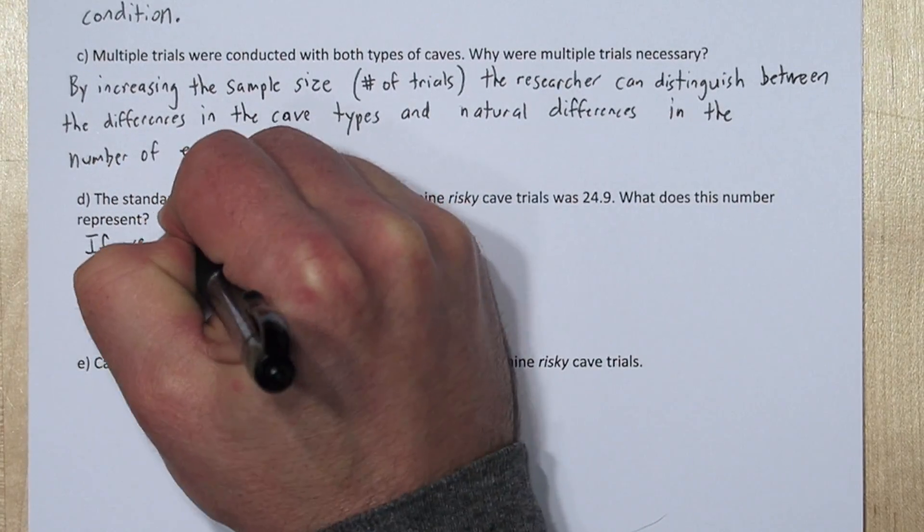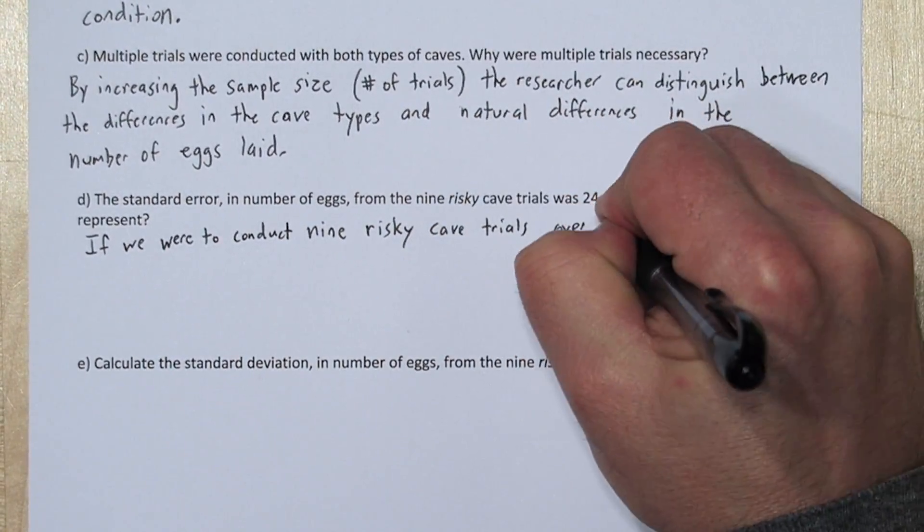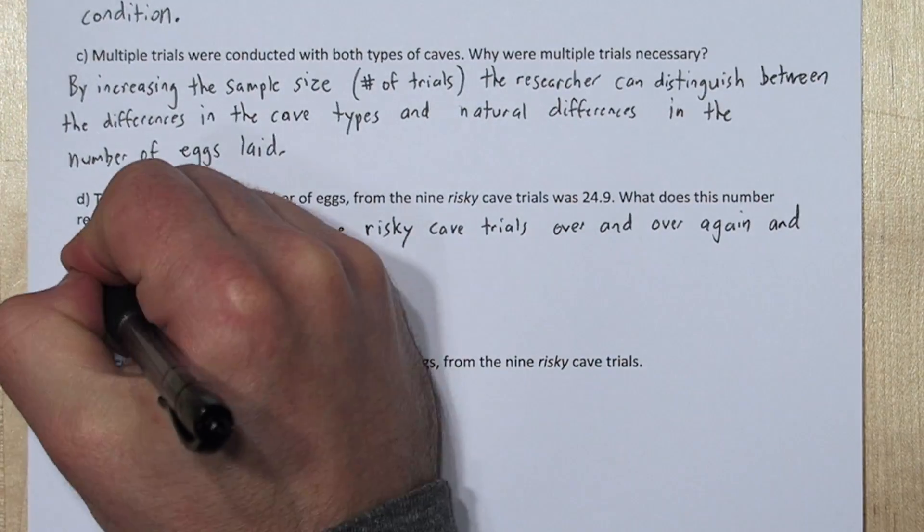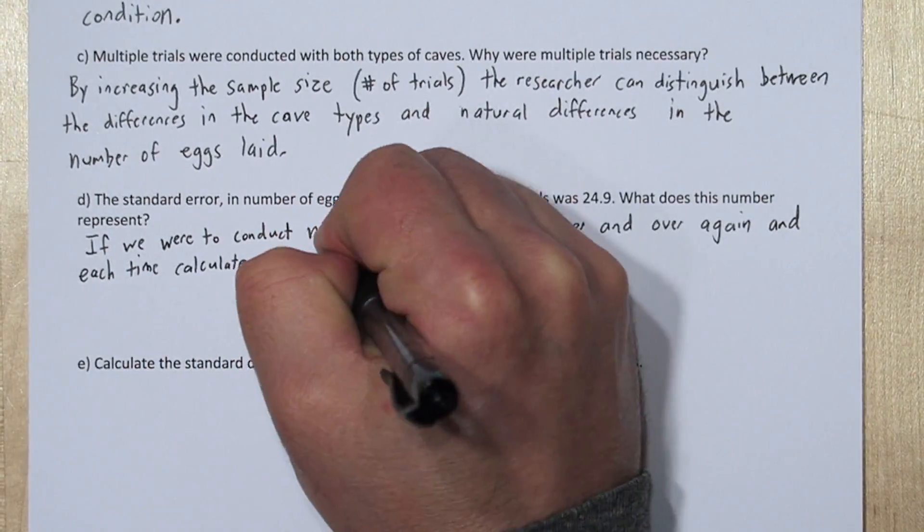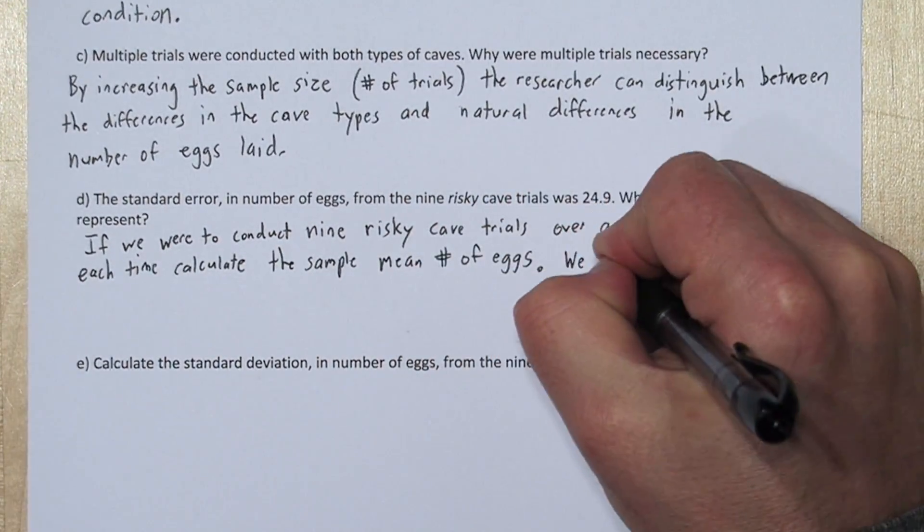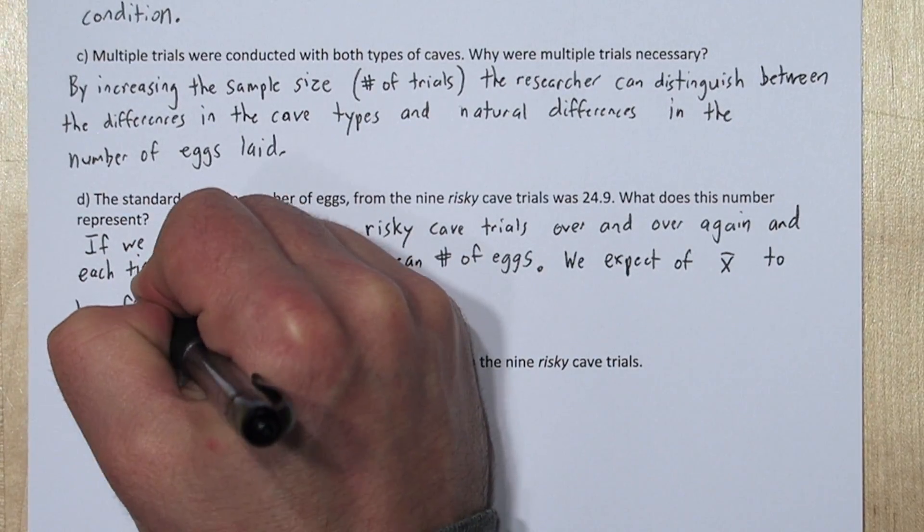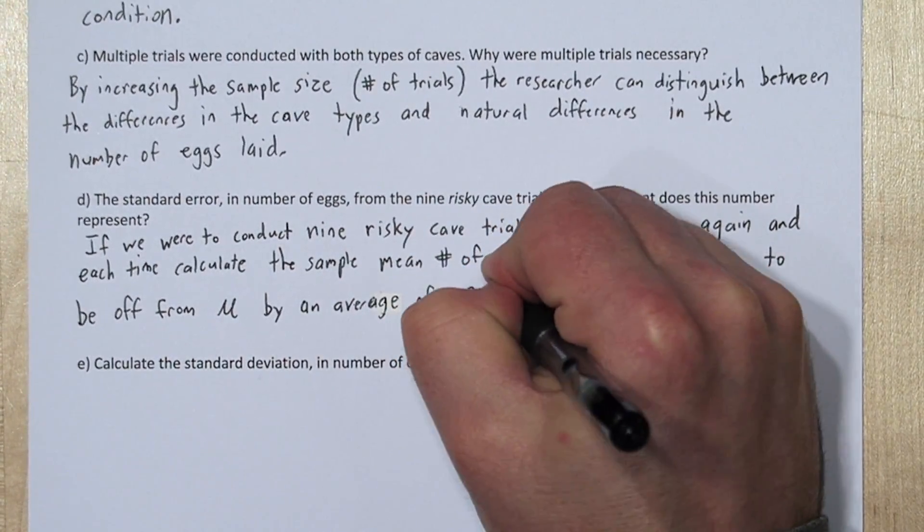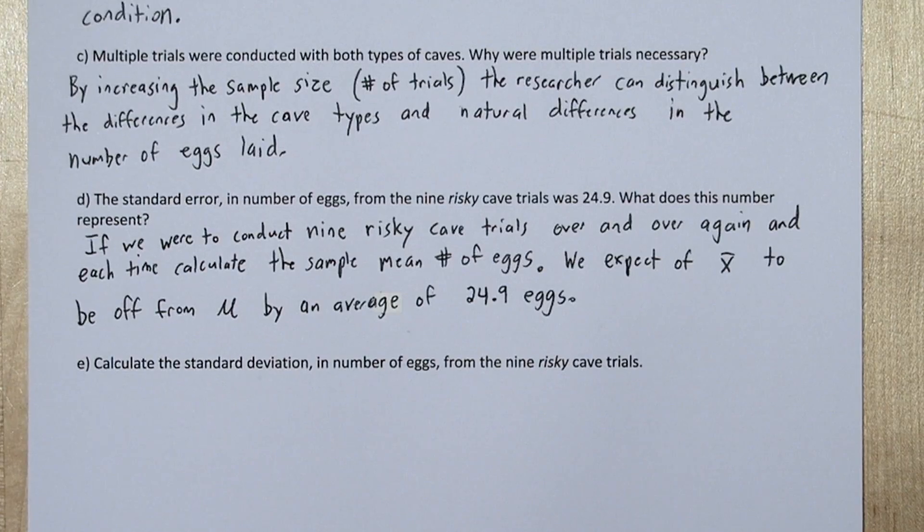If we were to conduct nine risky cave trials over and over again, and each time calculate the sample mean number of eggs, which is x-bar, we expect our x-bar to be off from mu, the true mean number of eggs, by an average of 24.9 eggs.